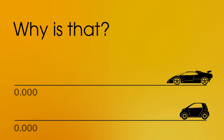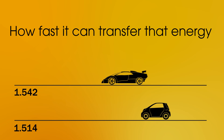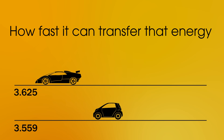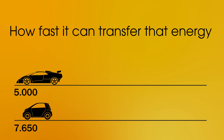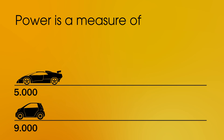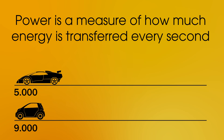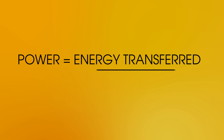Well, it's how fast, or at what rate, it can transfer that energy. As we can see, the sports car transfers its energy much quicker than the other car. In physics, we say power is a measure of how much energy is transferred every second. We can calculate it using the equation: power equals energy transferred divided by time. That gives us a unit for power of joules per second, or the watt.